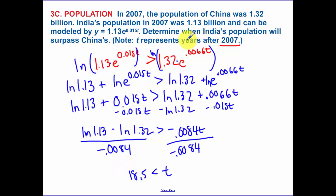So determine when. So I need a year. Remember t is representing years after 2007. So I need to do 2007 plus 18.5 years. So that's going to be during 2025.